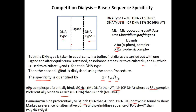Similarly, daunomycin preferentially binds to GC-rich DNA over AT-rich DNA. For sequence specificity analysis, two different types of AT-containing DNA are used: poly d(A-T) — an alternating AT sequence where one strand has alternating A and T — and poly dA·poly dT, where one complete strand is poly-adenine and the other is poly-thymine. Both have the same base composition (AT-rich) but differ in sequence arrangement.